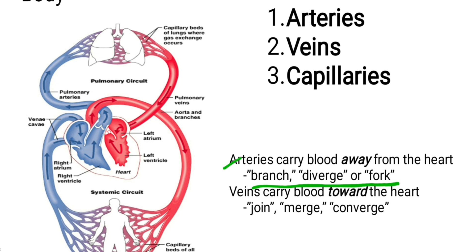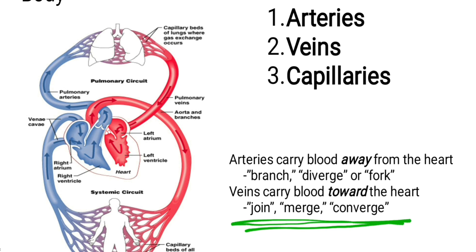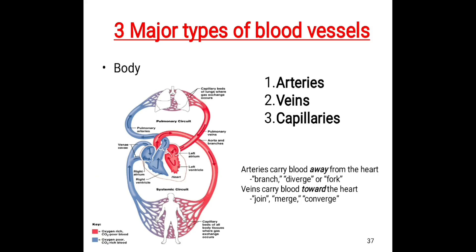Veins carry blood towards the heart and they are said to converge or merge. Different veins bring blood from the lower part of the body and the upper part of the body and converge into the heart. That is why veins are described as converging, while arteries are diverging.